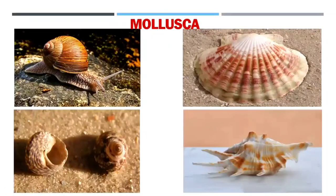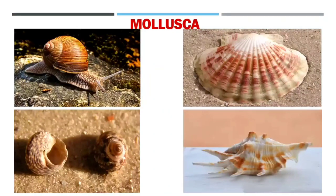Next is phylum Mollusca. In animals of this group there is bilateral symmetry. The coelomic cavity is reduced and there is little segmentation. In addition, they have kidney-like structures for excretion and a foot used for moving around. Examples include snails and octopus.